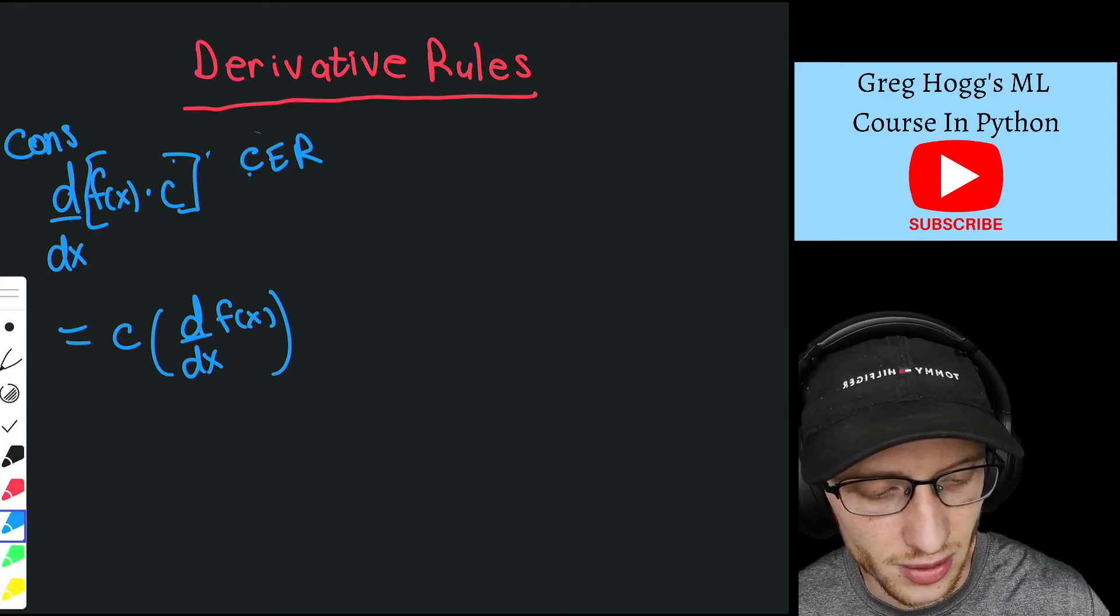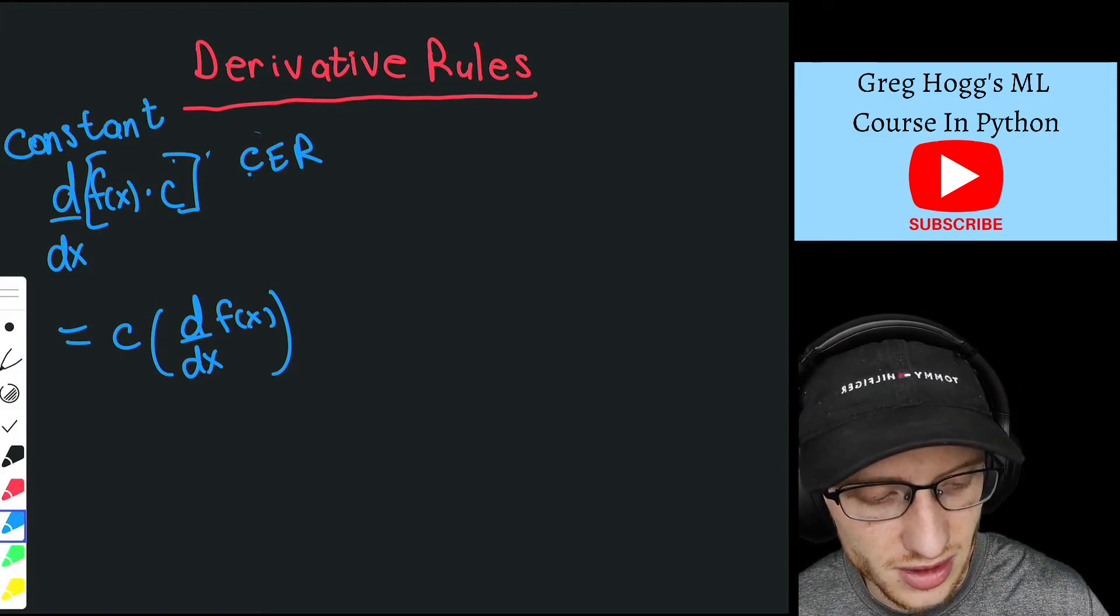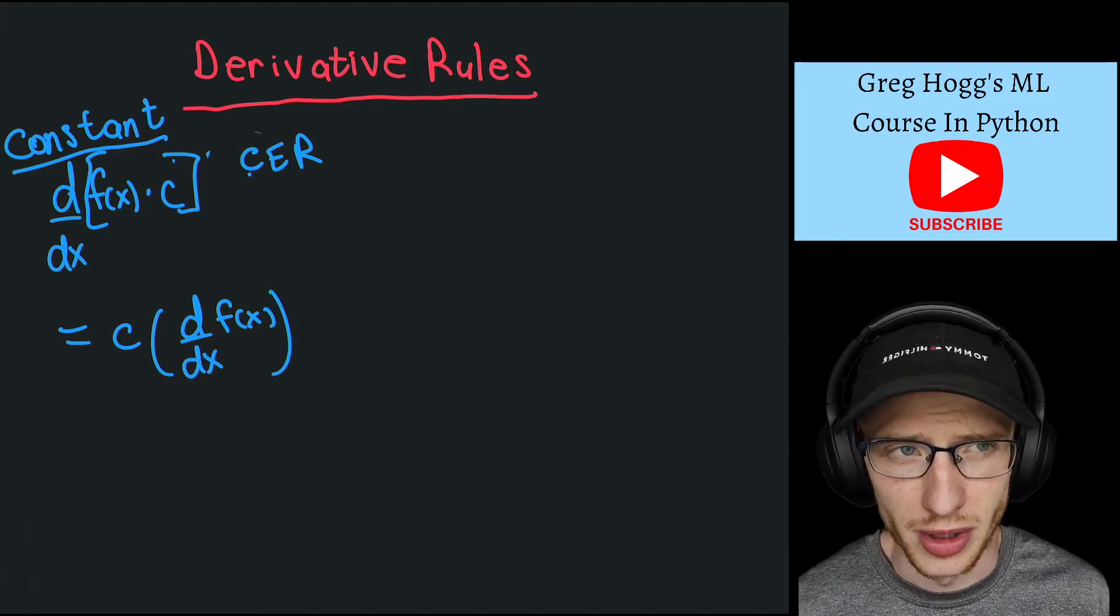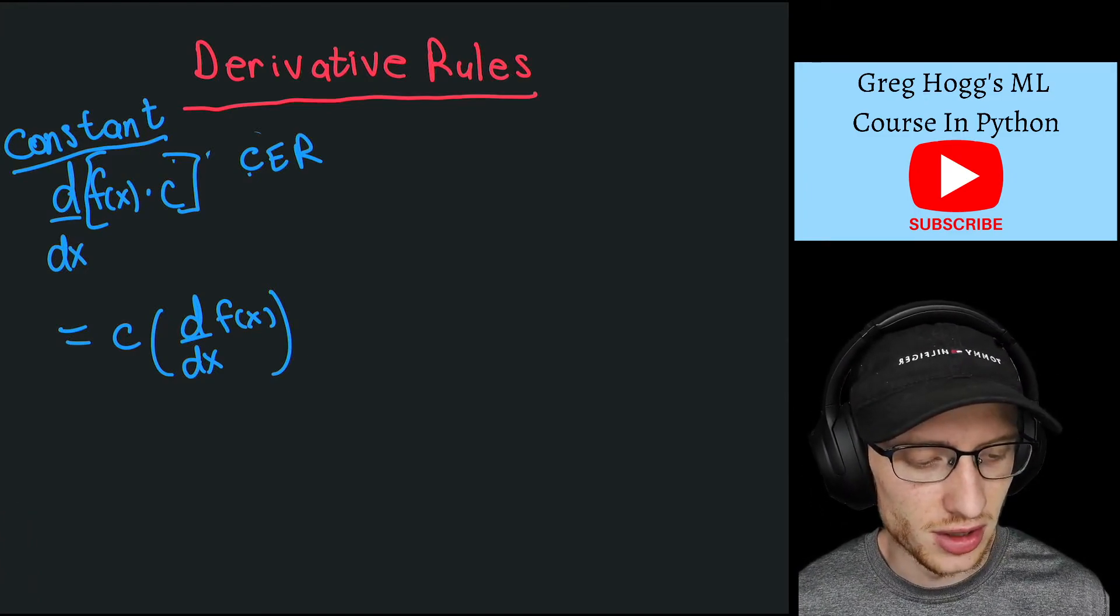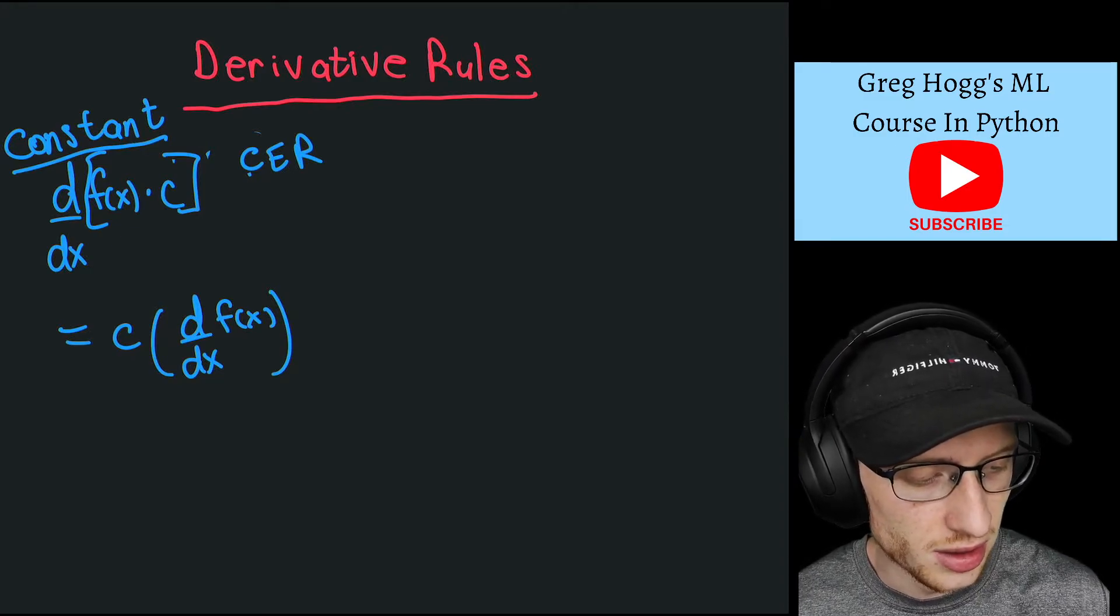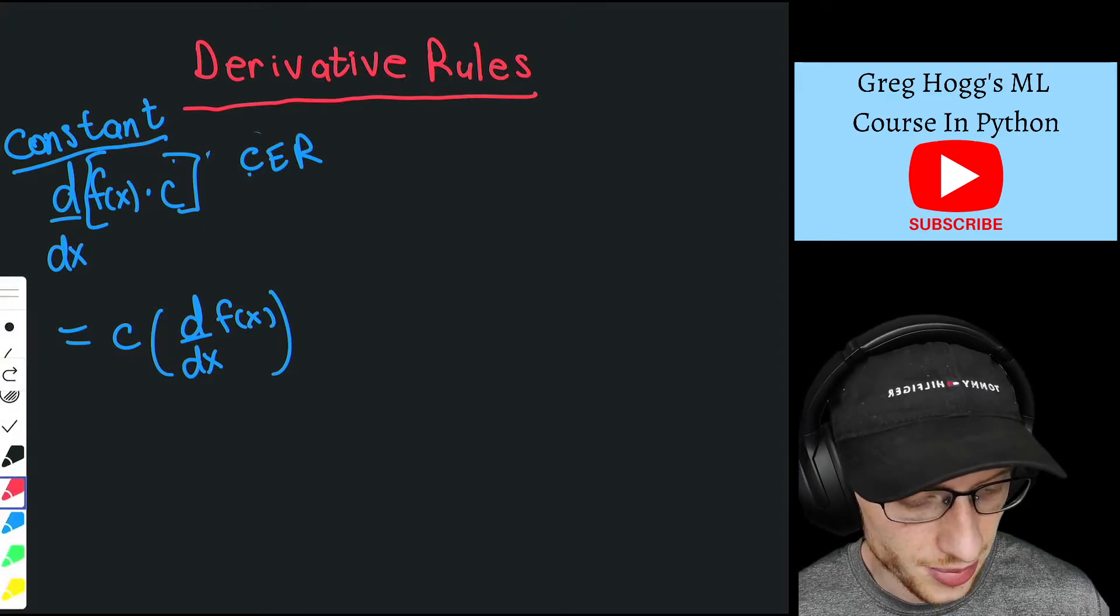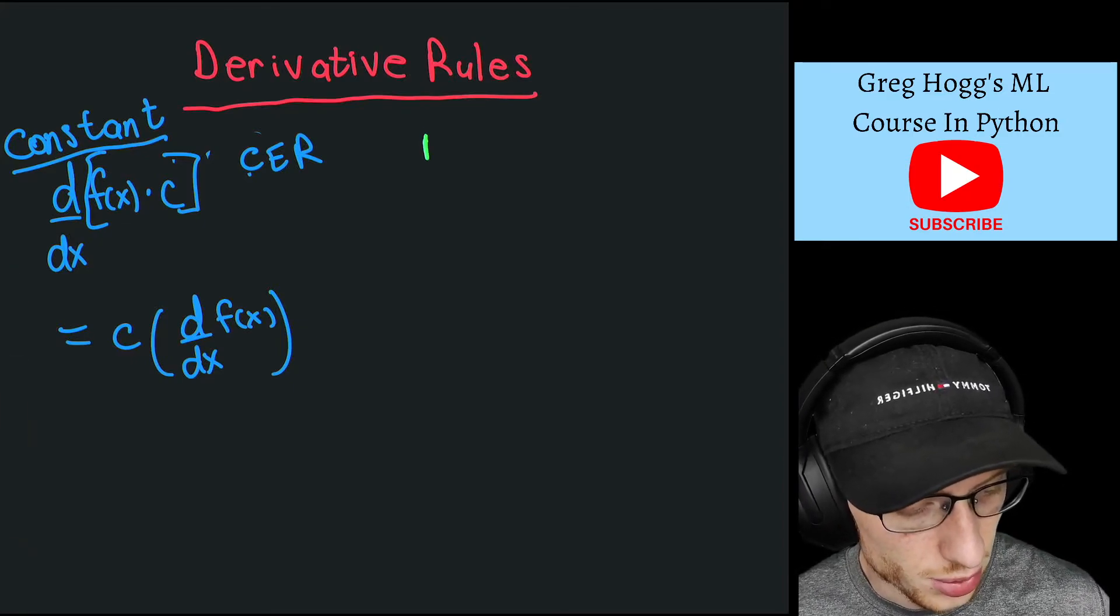I have a PDF down below of all these rules, or you could look one up online. So that's the constant rule. Next we have the product rule.